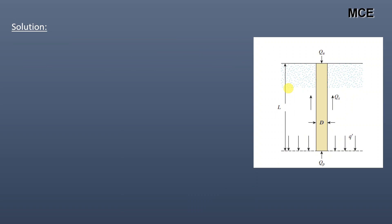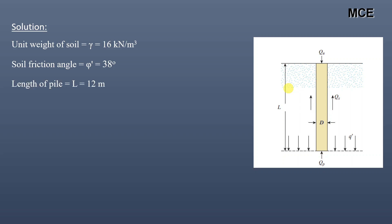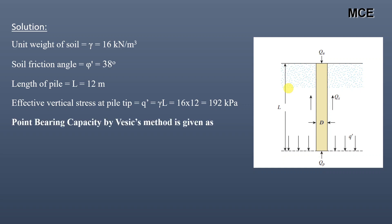First, we summarize what is given: unit weight of soil γ = 16 kN/m³, soil friction angle φ' = 38°, length of pile L = 12 m. The effective vertical stress at the pile tip is q' = γ × L = 16 × 12 = 192 kPa.